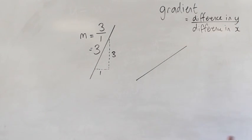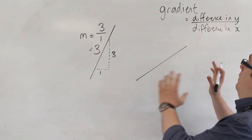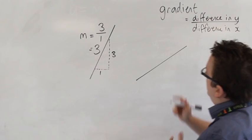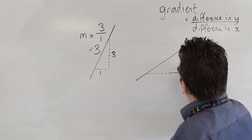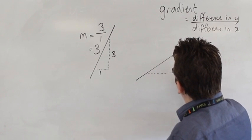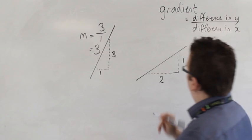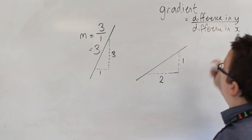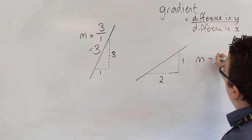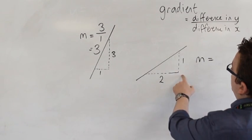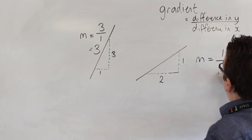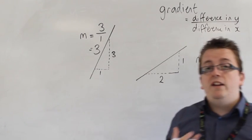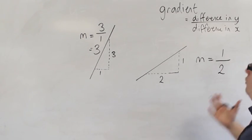So if, on the other hand, I had this line, and I measured, let's say, two along and one up, then I could say, well, in this case, the gradient of this line is equal to the difference in the Ys divided by the difference in the Xs. So the gradient of that line could be one over two, or a half.